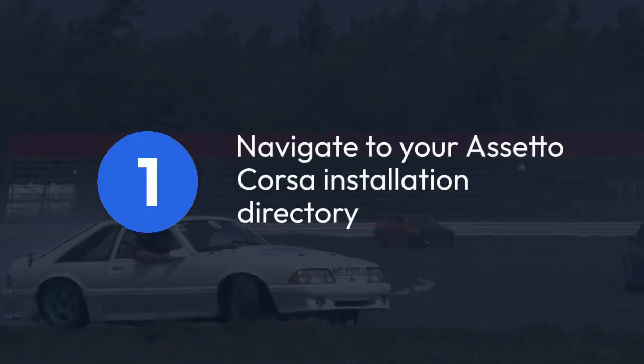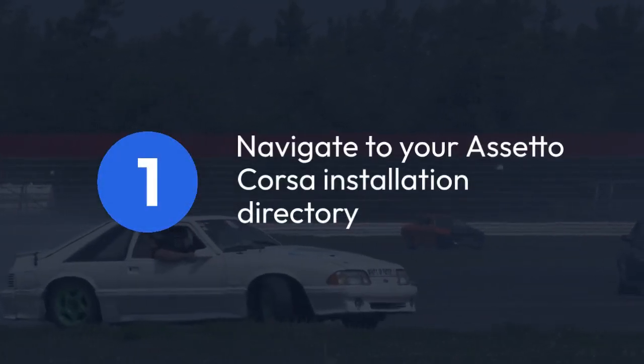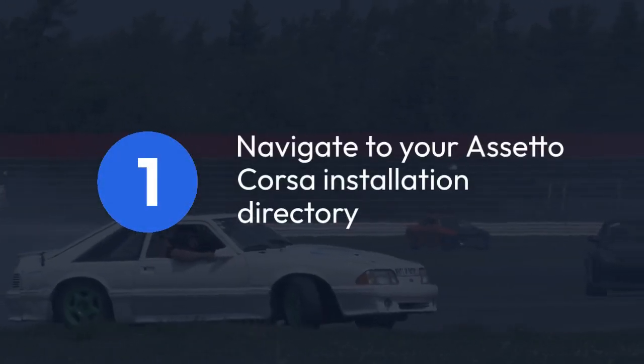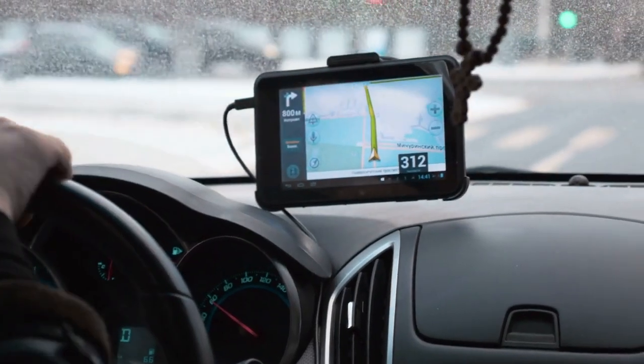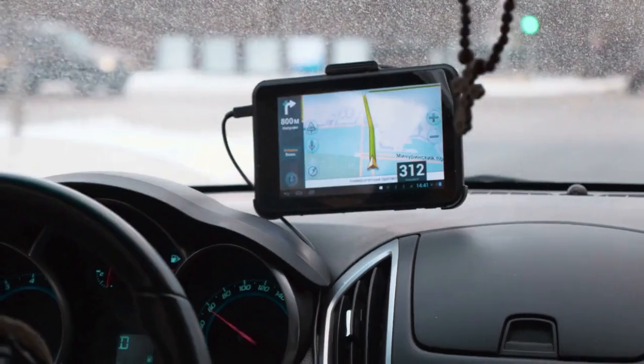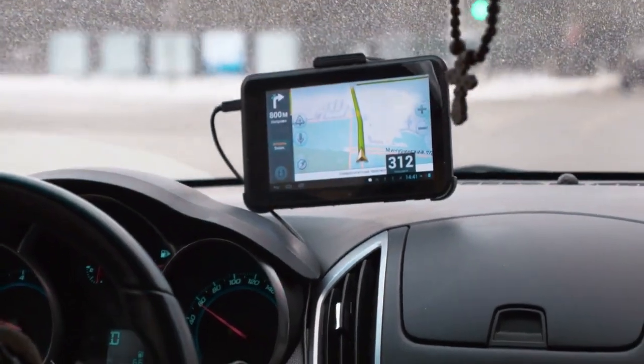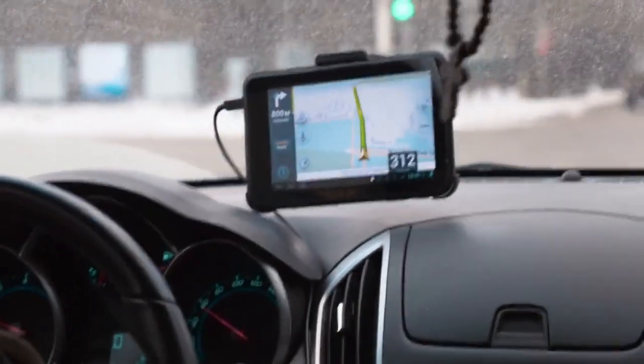Navigate to your Assetto Corsa installation directory. You can find it by right-clicking the game in your Steam library, selecting Properties, and then clicking on Local Files, and then Browse Local Files.